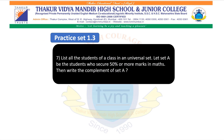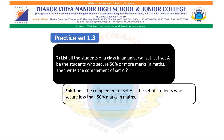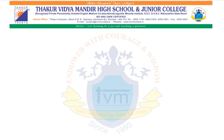Sum number 7: List all the students of a class in a universal set. Let set A contain students who secure 50% or more marks in maths. Then write the complement of set A. The complement is the set opposite to the given set. Set A includes students who secured 50% or more marks in maths. The complement of set A is the set of students who secure less than 50% marks in maths. I hope you all understood today's topic. Thank you.